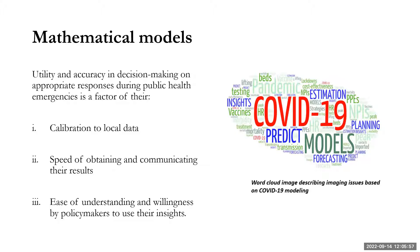We have an image of a word cloud describing the issues that were around COVID-19, including estimating mortality, estimating cases, planning for limited resources, forecasting and insights that were derived, as well as vaccination. This word cloud shows the issues during the pandemic that models were used to address.